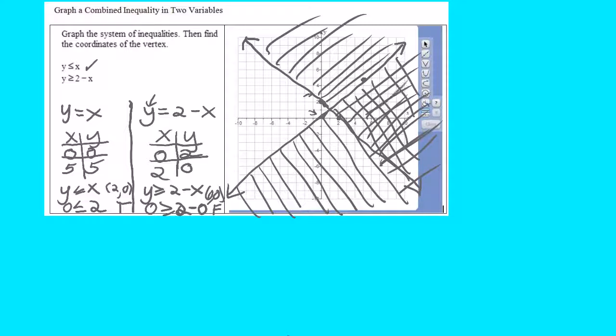All right. You can see where the colors overlap. Well, there aren't colors here, but you can see where the lines overlap, where the two shadings, that's a better way to say it. You can see where the shadings overlap. This is the solution region right here.